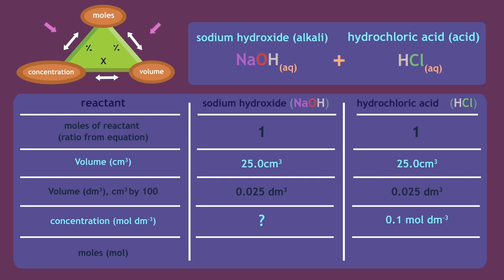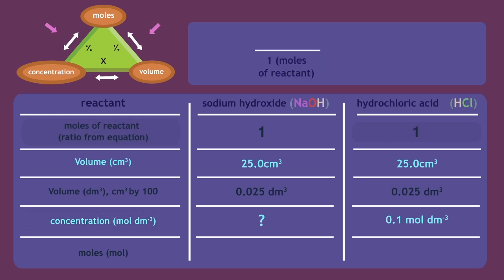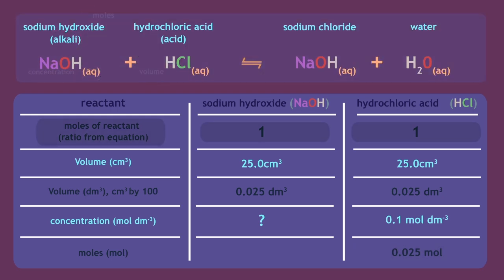Use the formula triangle and calculate the number of moles, then pause the video and continue when ready. The concentration is found by dividing the number of moles by the volume in dm³. Your table should now show the calculated moles. If you look at the ratio of moles of reactants in the equation, they are the same.